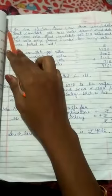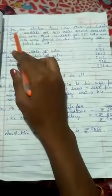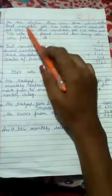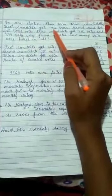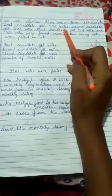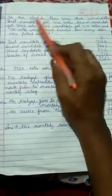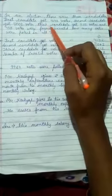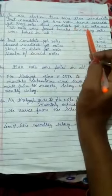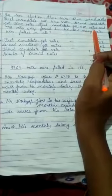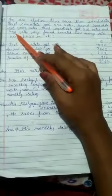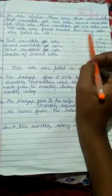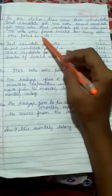Now question number three. In an election, there were three candidates. The first candidate got 4,132 votes, the second candidate got 3,002 votes, the third candidate got 2,112 votes, and 718 votes were found invalid. How many votes were polled in all?